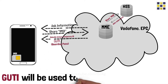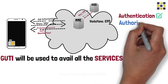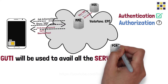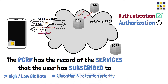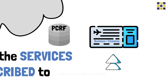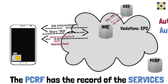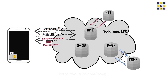The boarding pass is equivalent to the GUTI. From here onwards, the GUTI will be used to avail all the services. Once the authentication is done, the user needs authorization to use the services. The PCRF has the record of the services that the user has subscribed to. Depending on this information, services such as high or low bitrate, allocation and retention priority, QoS class indicator, etc. are enforced. This is similar to getting the info whether Ross is a business or economy traveler. Once on board, the Serving Gateway or SGW is in charge of the services, and with the help of the Packet Data Network Gateway or PGW, serves the user. PGW gets the subscriber profile from PCRF and enforces the services for the user.